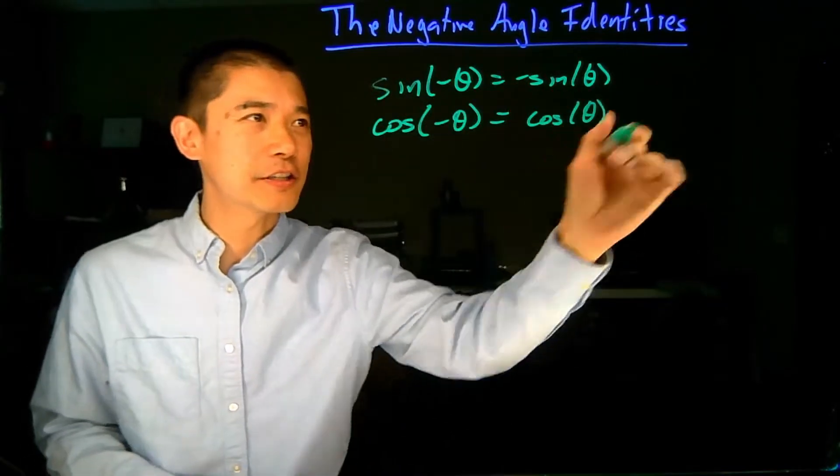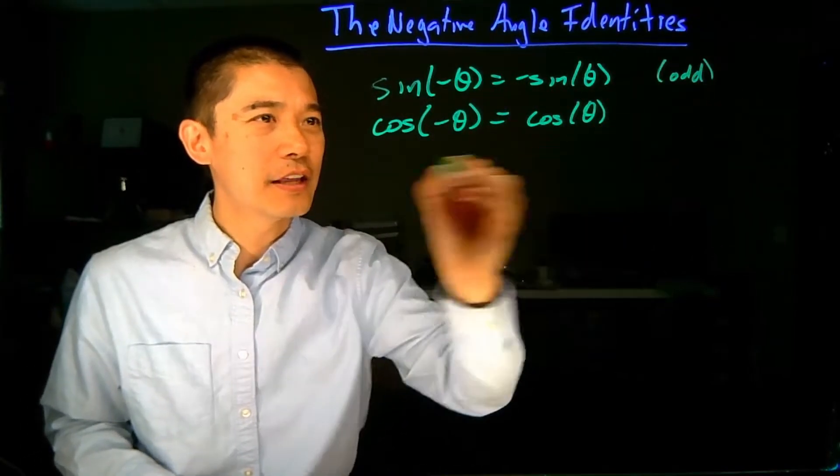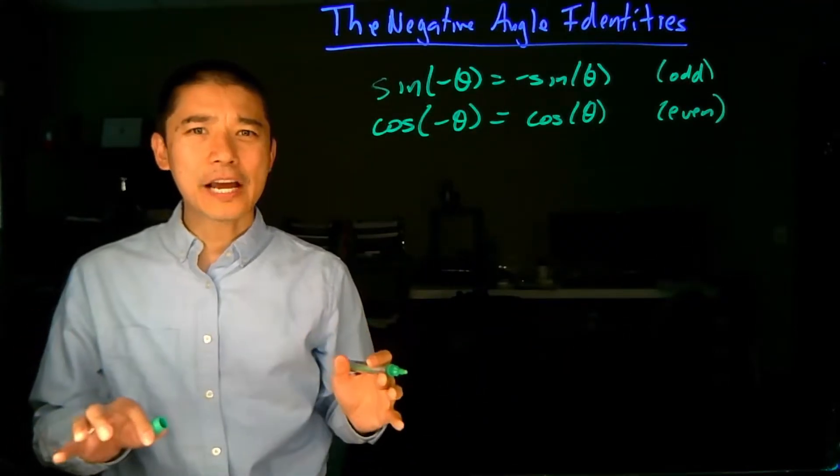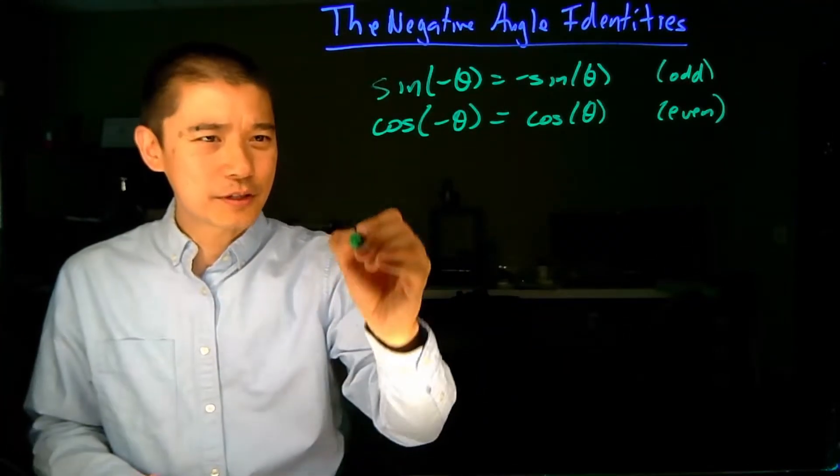So, the sine function is an odd function, and the cosine function is an even function. And with these facts, you can actually get the rest of them. So, let's do an example.